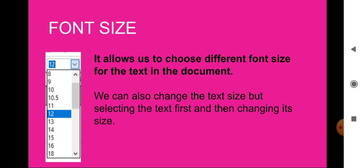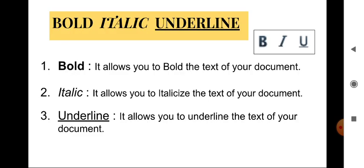To use any of these options, you need to type the text first, then select the text, and then click on the desired size or option. The text needs to be selected in order to format it. Next we have bold, italic, and underline options.